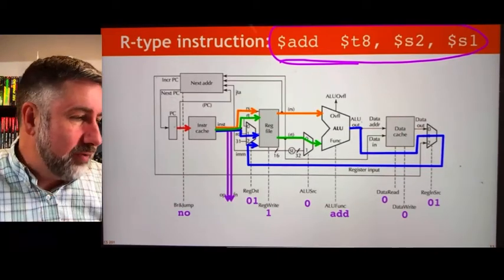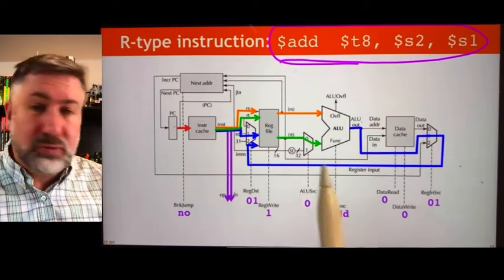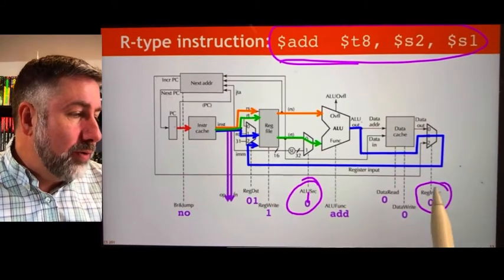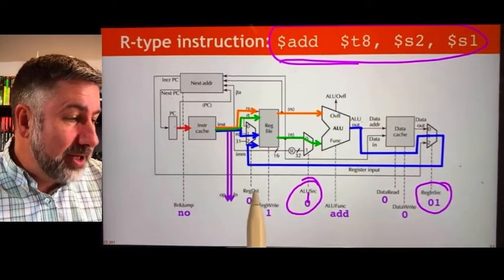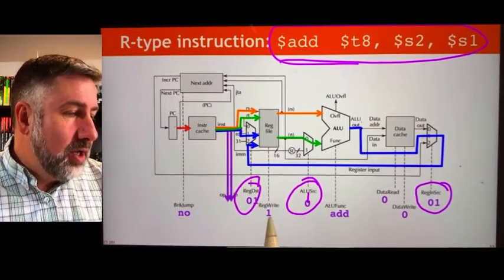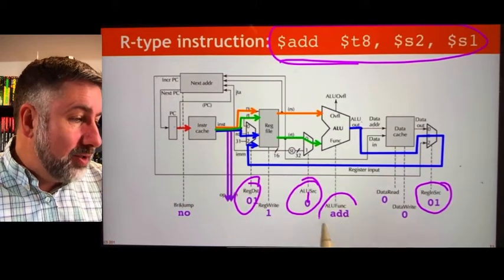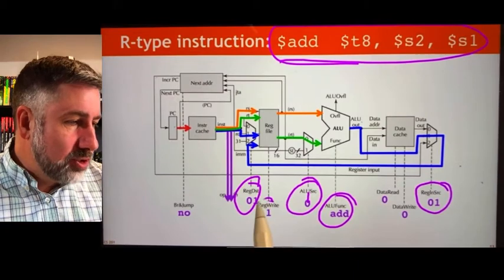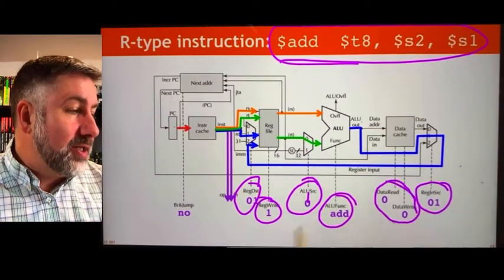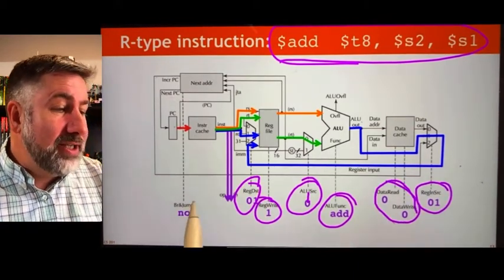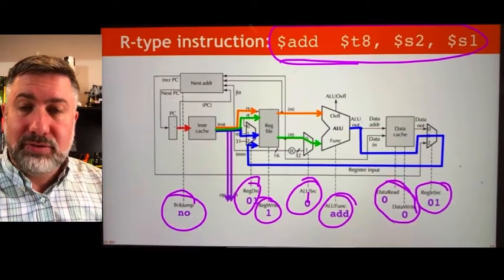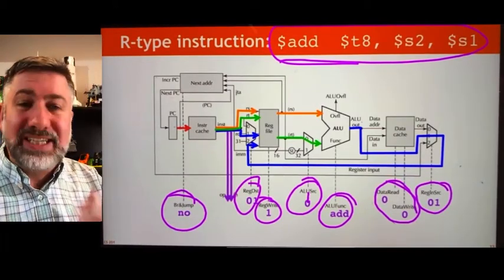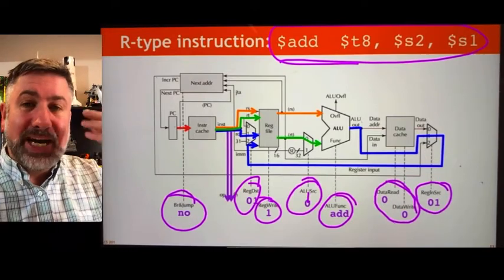We have these multiplexers which we'll talk about in some detail later on. We have to have control logic which will route through these multiplexers to get the information to the right place. We have control logic that tells the ALU what to do, tells the register file what to do, tells the data memory what to do, and tells the next address logic what to do.